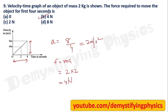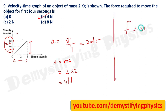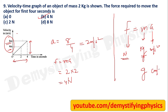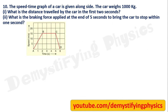Always check whether everything is in SI units. If distance is in kilometers or time in hours, convert first. Mass should be in kg, acceleration in m/s², and force in Newton. If you use grams, acceleration comes in cm/s² and force comes in dyne.